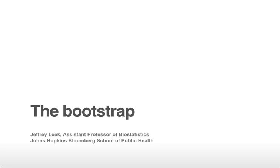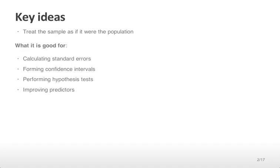The key idea is to treat the sample as if it were the population and sample from that distribution, then perform analyses as if you had taken a new sample from the population. It's good for calculating standard errors, for forming confidence intervals, and performing hypothesis tests. In the next lecture we'll learn about how, by averaging over multiple predictors, it can actually improve your prediction accuracy.